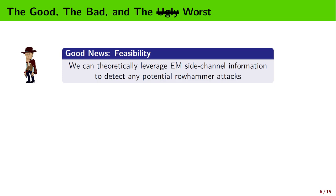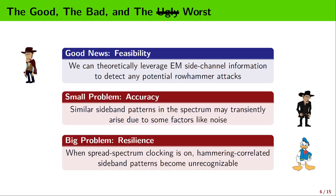So now we see that we can use EM signals emanated from the DRAM clock to detect Rowhammer attacks. However, we still have two problems. One problem is that similar patterns may transiently arise due to some factors like noise. This will negatively affect the detection accuracy. The other problem is more severe. As we will see later on, a feature called spread spectrum clocking can significantly impair our detection.